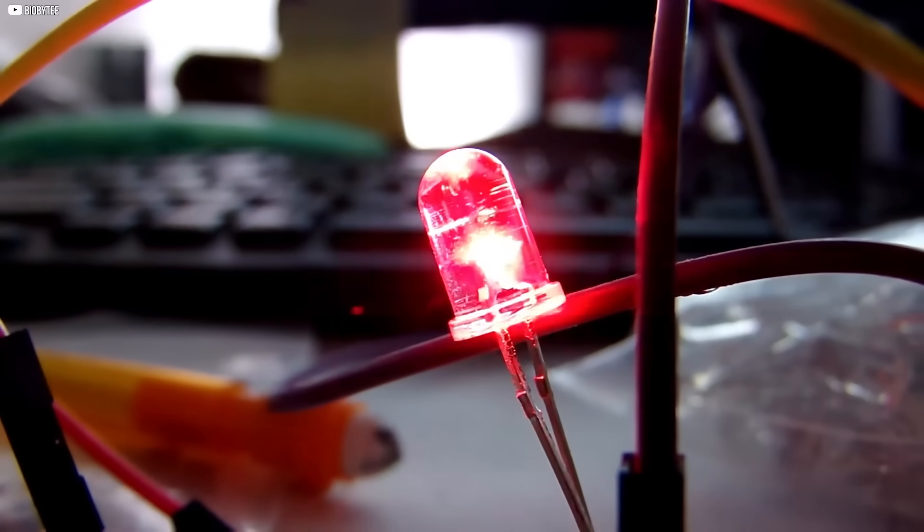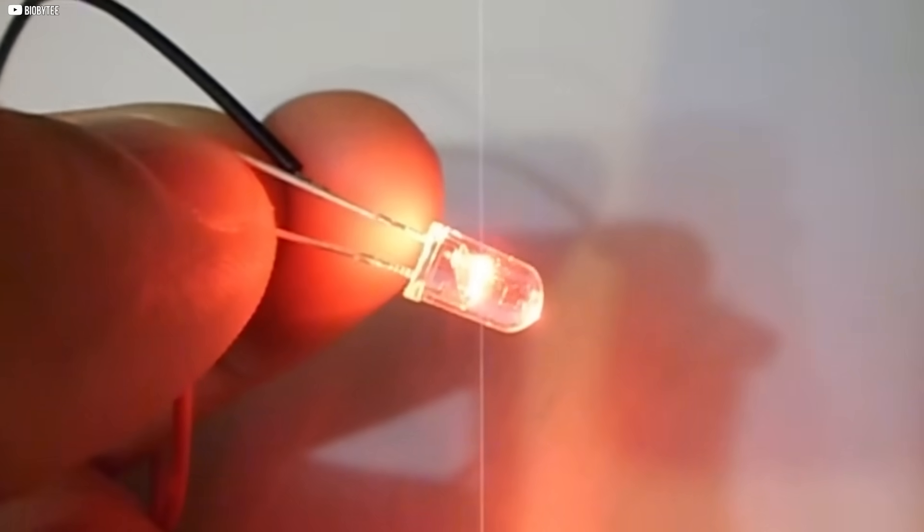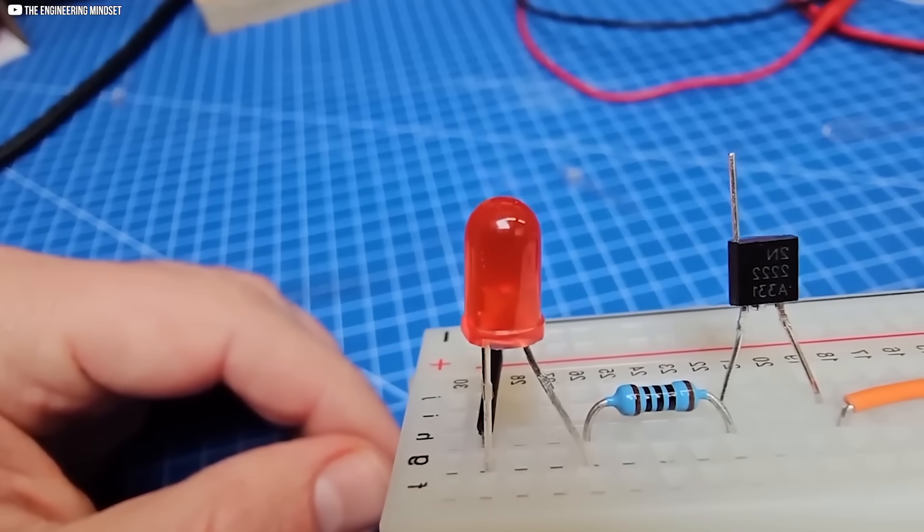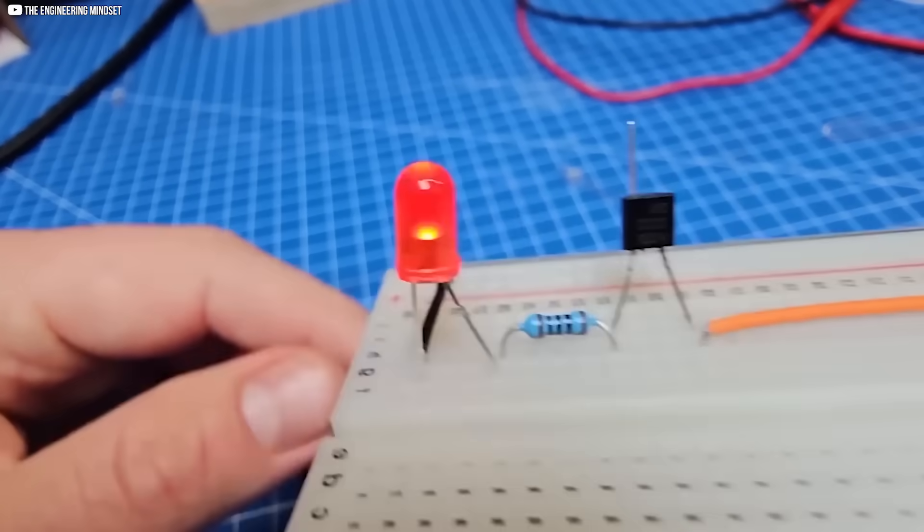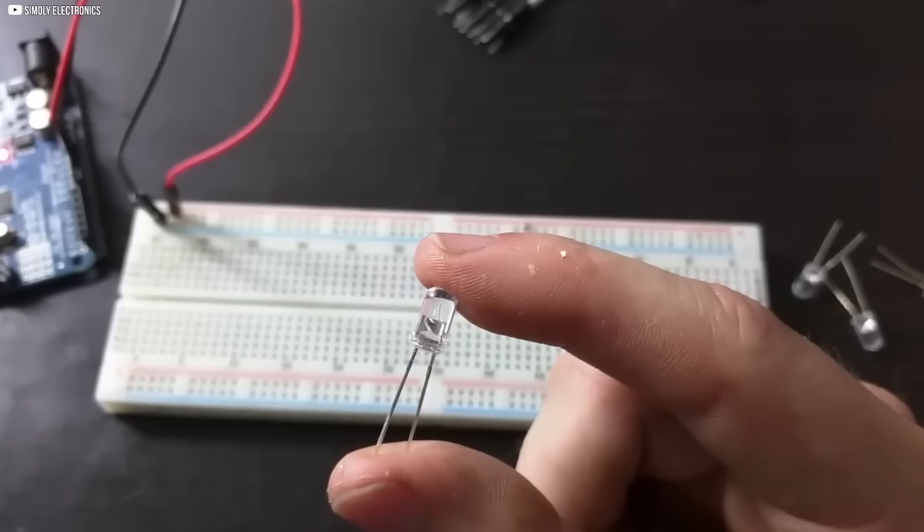Even the best LEDs may only emit 40% of the light they generate. Some fall far lower. Which means energy is being wasted not in creation, but in escape. To fix this, we need more than new materials. We need a new surface. And nature already built one.